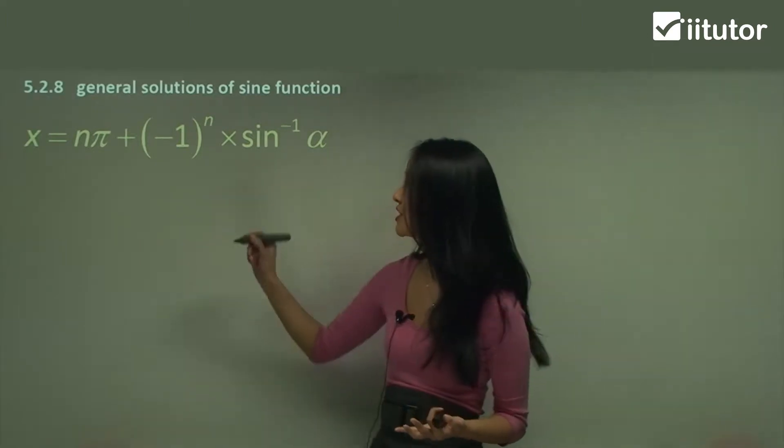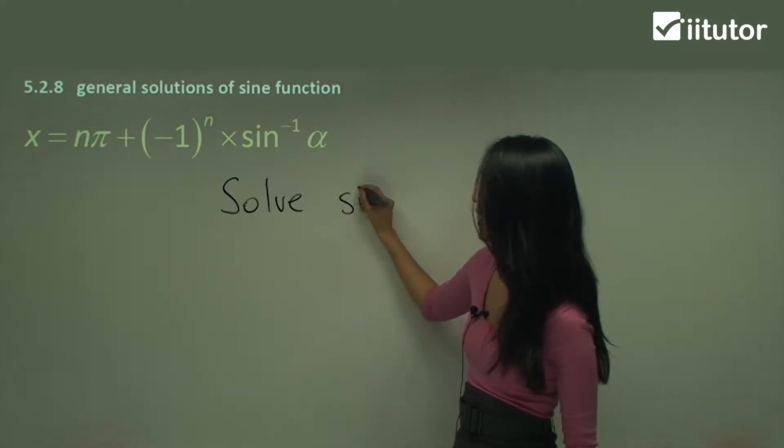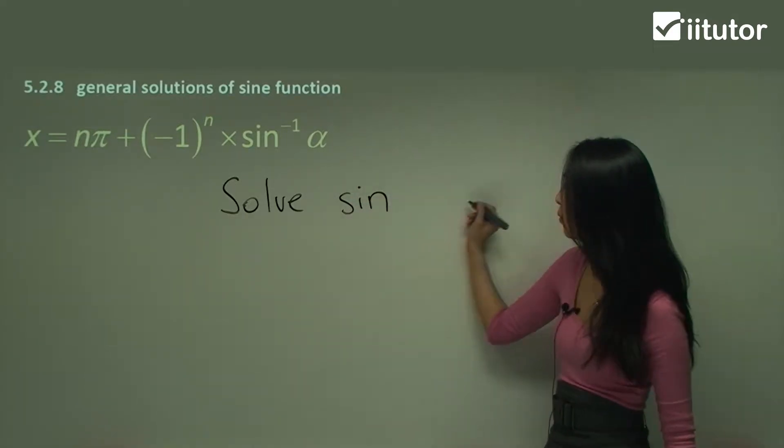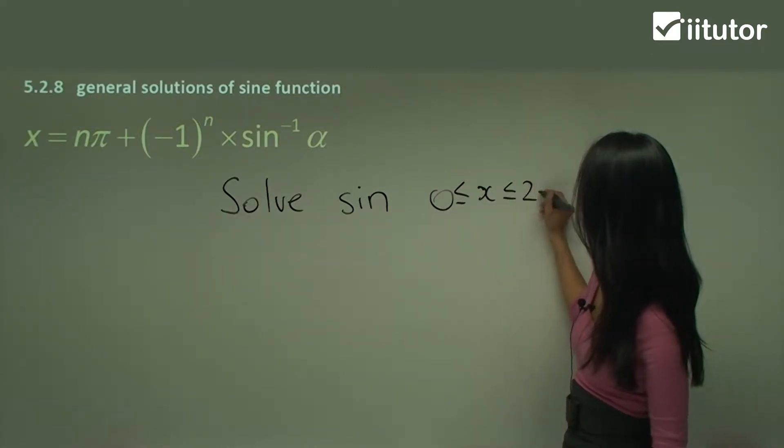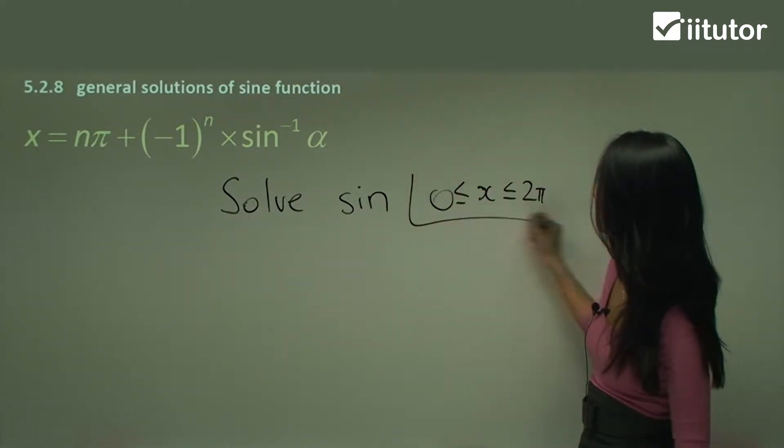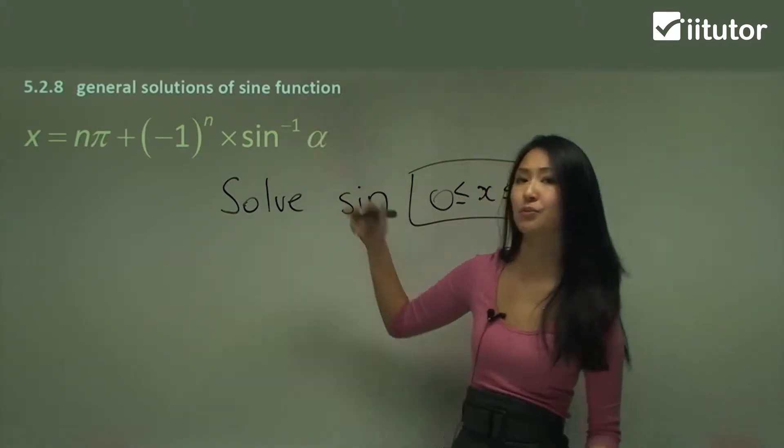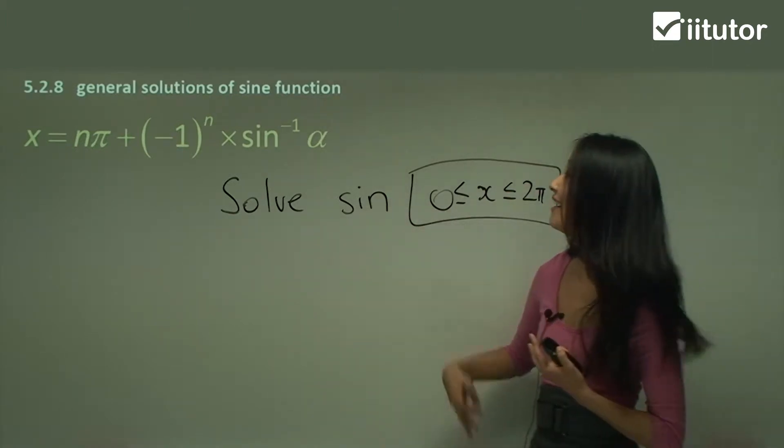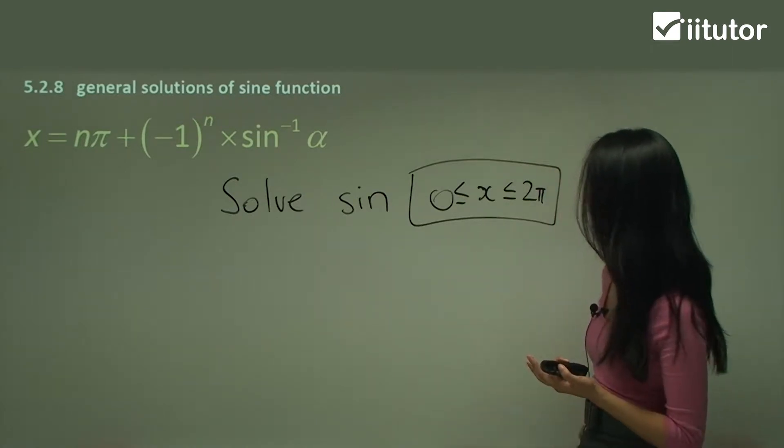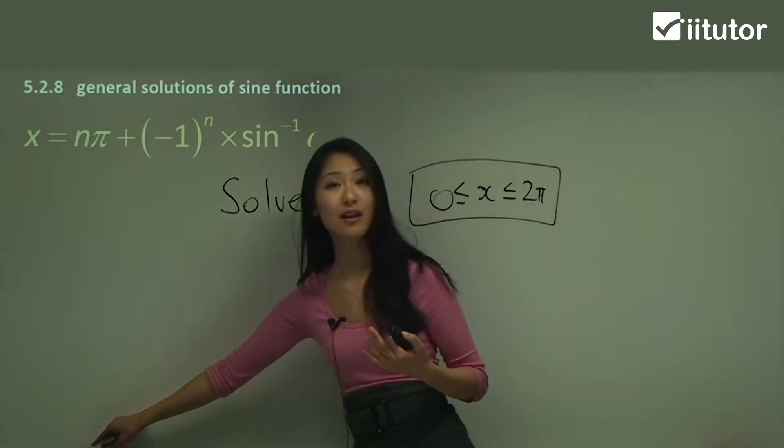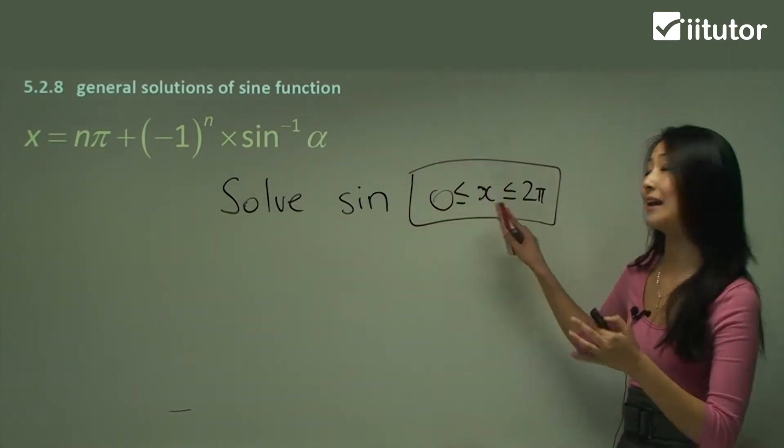So you know most of the time you'll see solve sine something for between zero and two pi, but if it doesn't specify a domain then we have to write a general solution where it could be any answer. The other way that the general solution is used for is sometimes when you want to find multiple solutions, you can use it to work out each one of those and see how it fits into the domain you've been given.